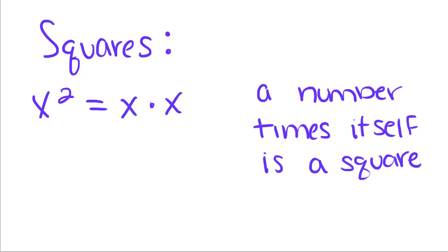We're going to be talking about squares because in our next video they're going to help us solve some triangle problems. A square is basically written like this — it's the number times itself. So right here we have x squared, so that's just x times x.